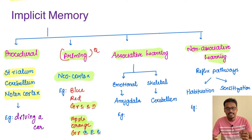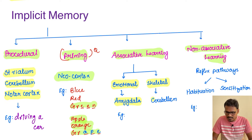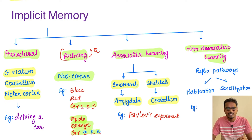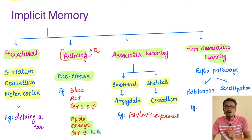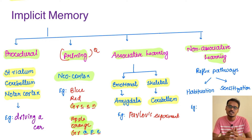Now coming to associative learning. In associative learning, the brain relates to some association and learns from it. There are two components: the emotional component, done with the help of the amygdala, and the skeletal part, under the control of the cerebellum. The best example is Pavlov's experiment — initially a bell is rung and then food is given, causing the dog to salivate. After repeated trials, when the bell is rung even without food, the dog salivates because it has associated the bell with the arrival of food.